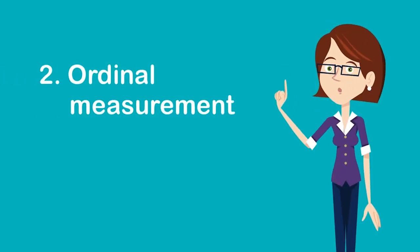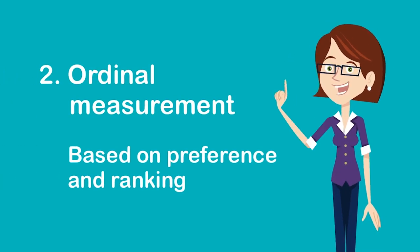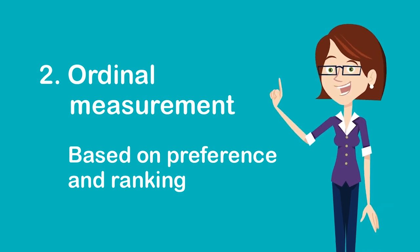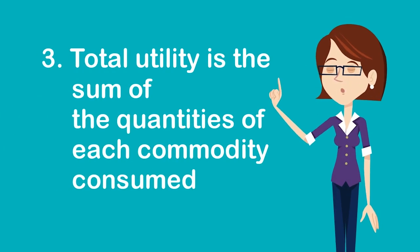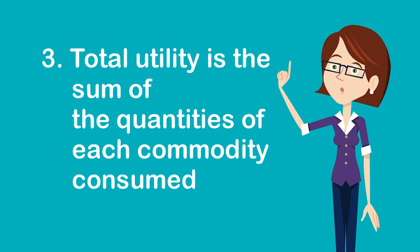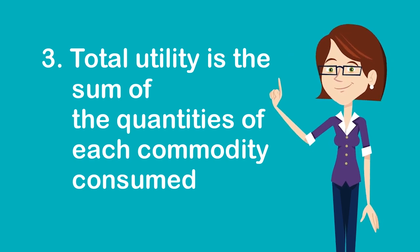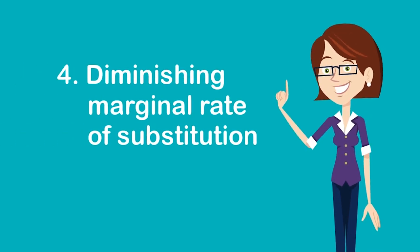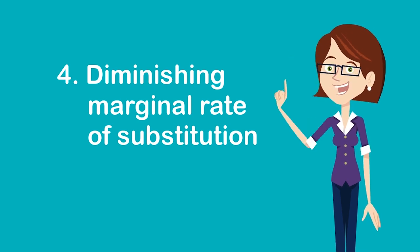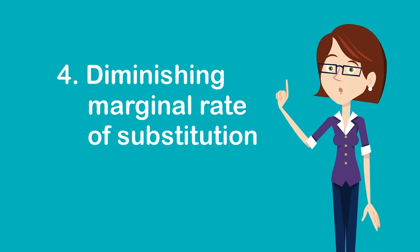Number two, ordinal — different bundles of goods are ranked according to the preference of consumers, and measuring satisfaction in terms of utils is not necessary. Number three, total utility is not additive and depends on the quantities of commodities; it is not the sum of marginal utilities. Number four, diminishing marginal rate of substitution — the rate of substituting one good for the other decreases at an increasing rate as the consumption of the other good increases.